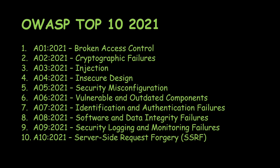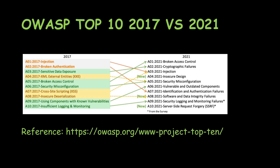Hello everyone, this is Muted and Nuts. Hope you guys are doing well. Today we'll be continuing the OWASP Top 10 2021 video series. The first two risks I've already covered in previous videos. Today we'll be looking at the third risk — injection. In 2017, injection was A01 (first place), and now it's come down to third position in 2021. Cross-site scripting from 2017's A07 is now merged into A03 injection.